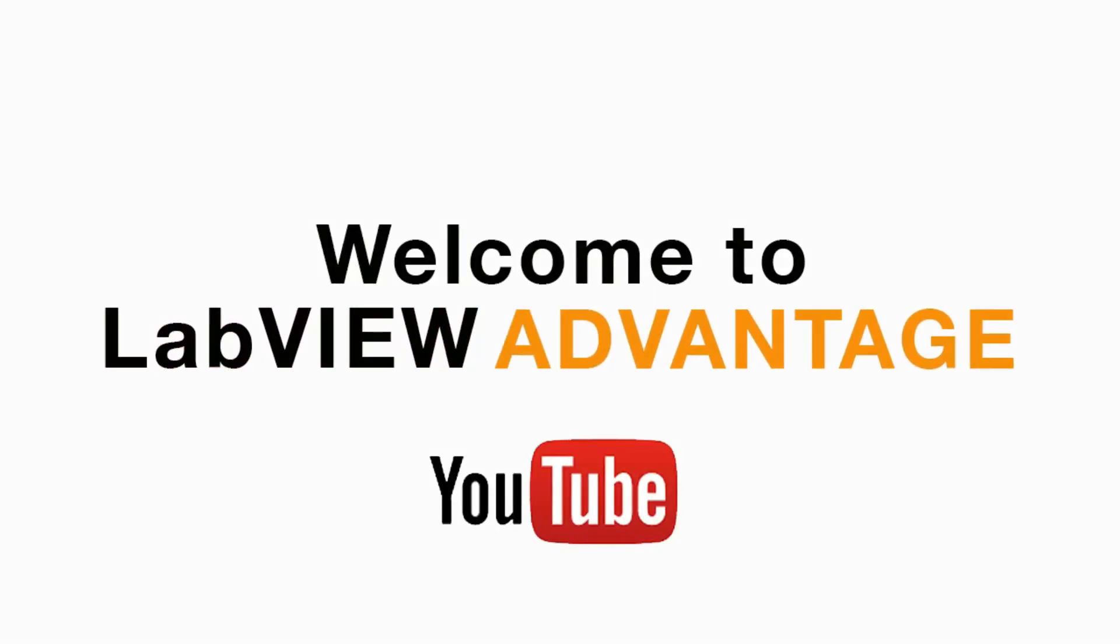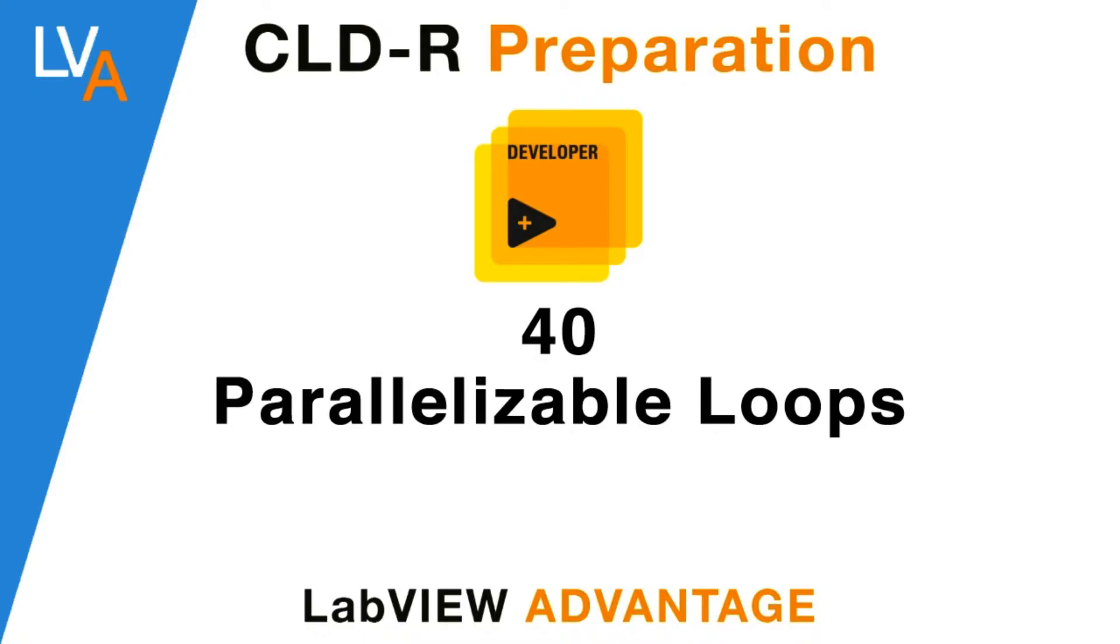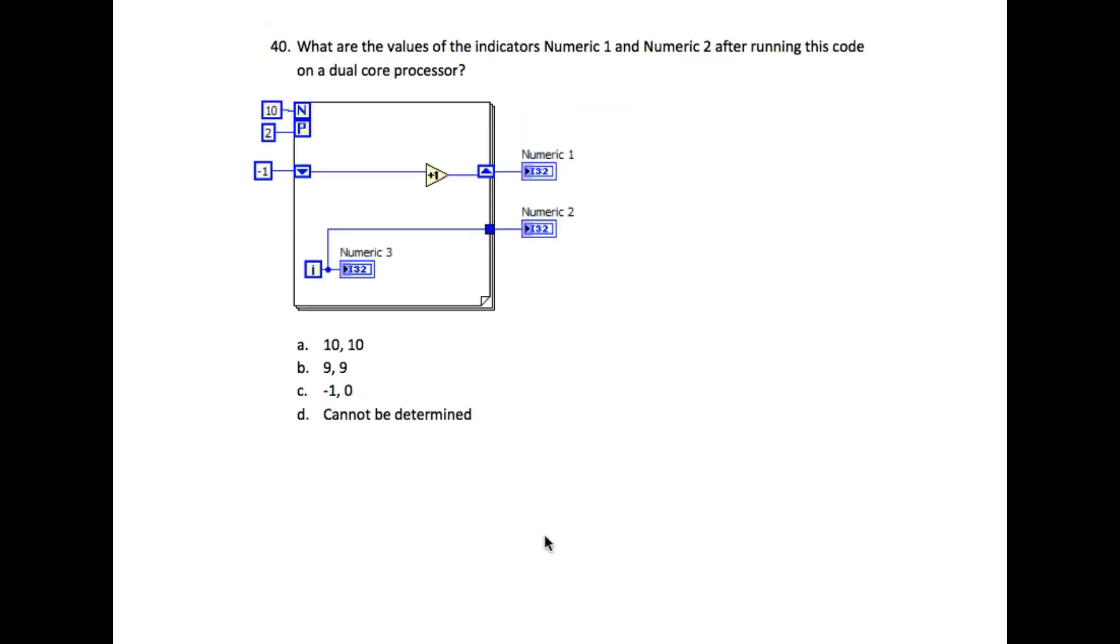Hi everyone, welcome to another CLAD preparation video on LabVIEW Advantage. Please pause the video if necessary to understand the requirement. Let us begin. The question says: what are the values of the indicators Numeric 1 and Numeric 2 after running this code on a dual-core processor?